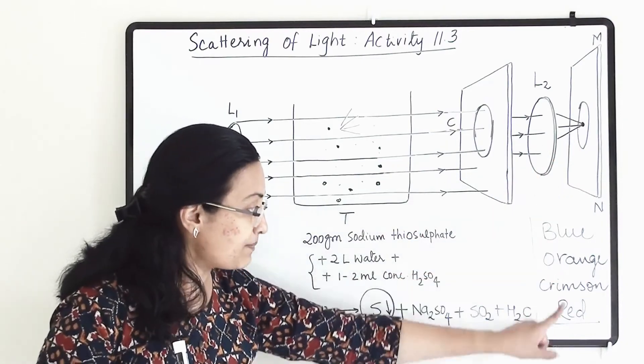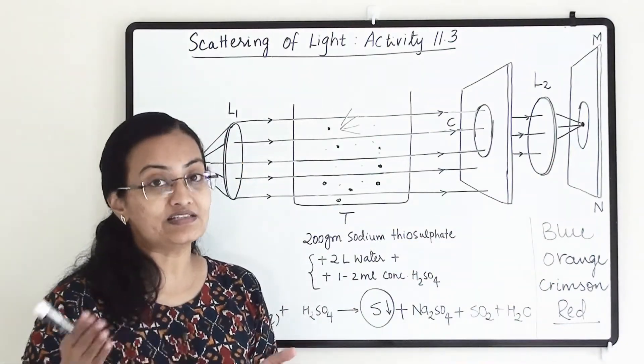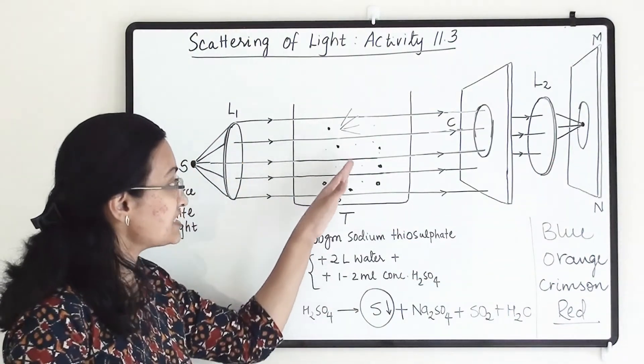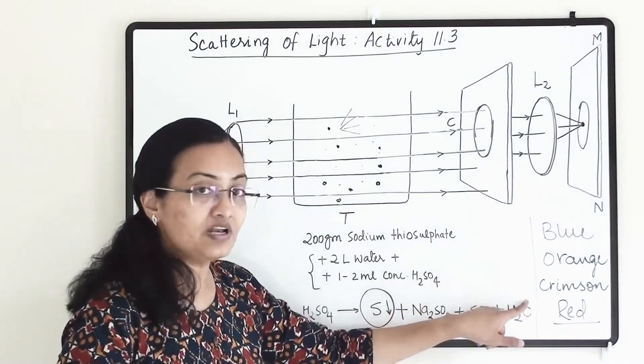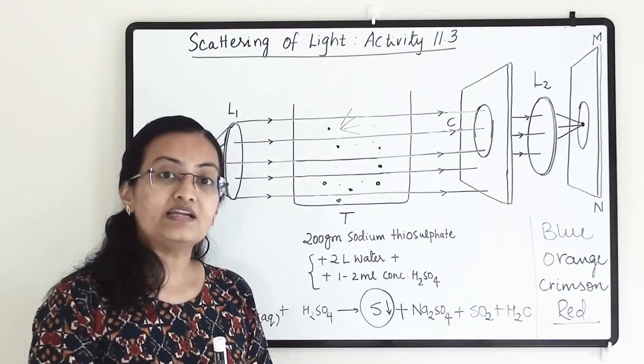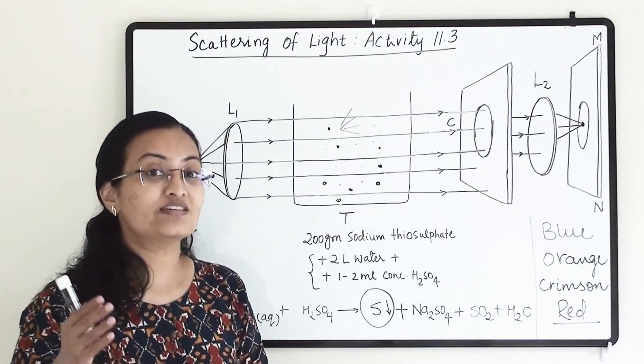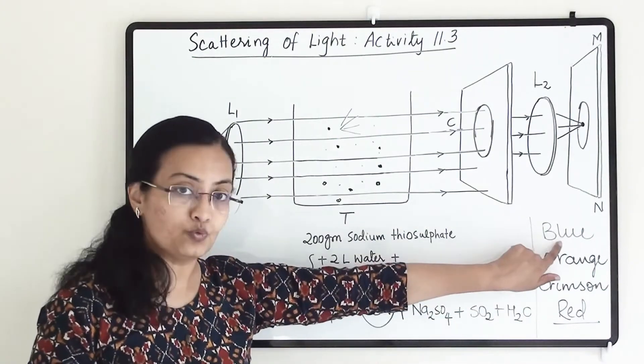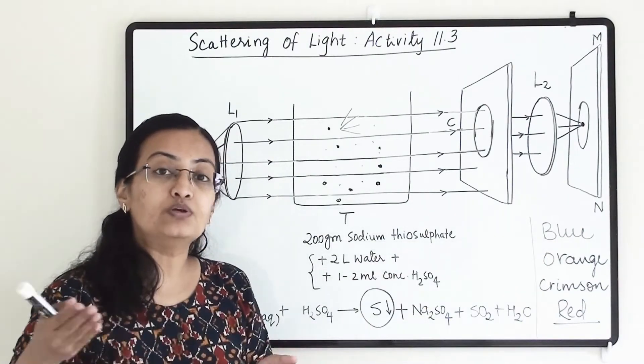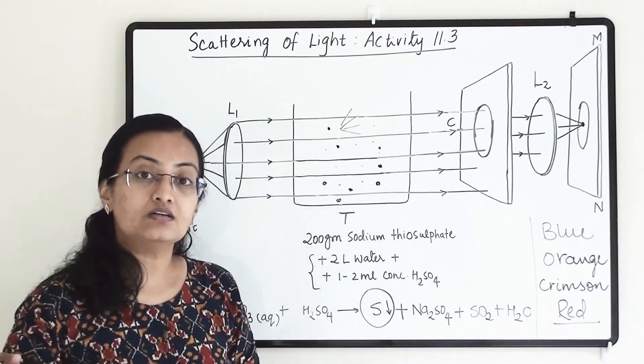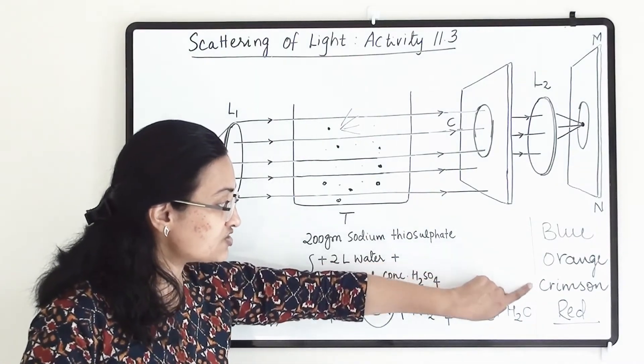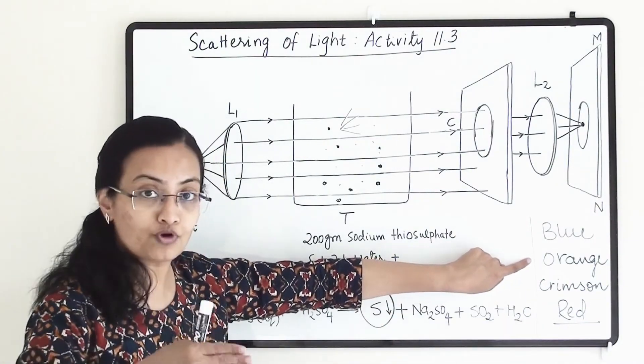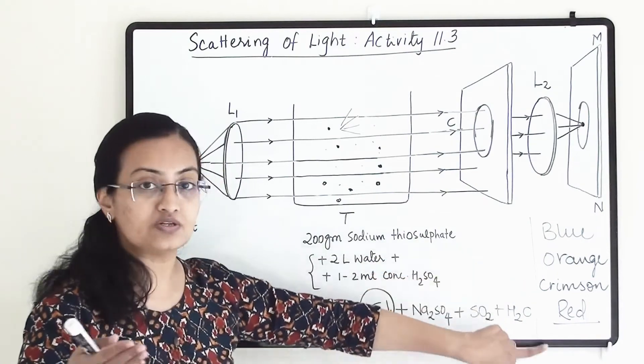So this happens because of the particle size. As continuously particles are growing bigger and bigger here also color of the light will change. Smaller particles will scatter light which has a short wavelength, so that is blue. And as the particles will grow in size it will scatter longer wavelength light and that's why we'll be able to see this change in color that it will go from orange to crimson and crimson to red.